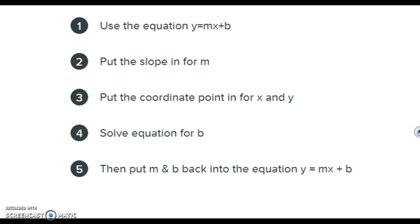The first step is writing down y equals mx plus b on your paper. That's your first step — what you should do when you're given a point and a slope. Then for step two, you're going to plug whatever slope they give you in for m in the equation. We're going to go through a couple examples, so it will make more sense in a minute.